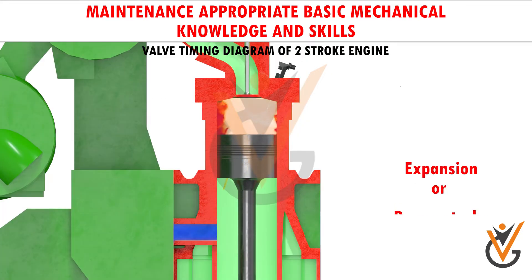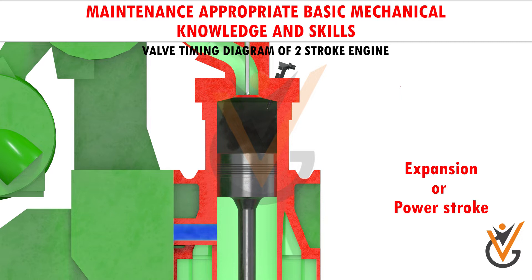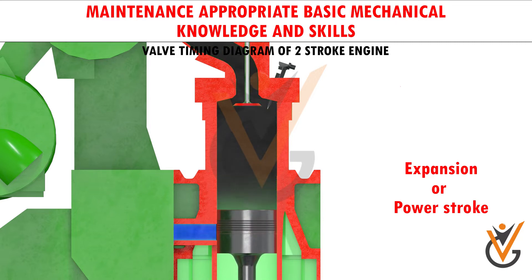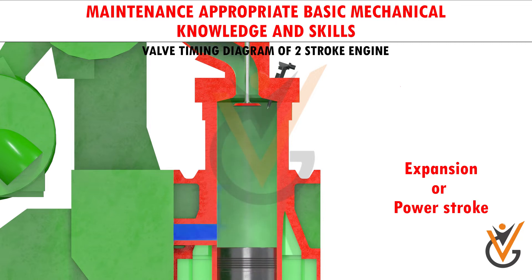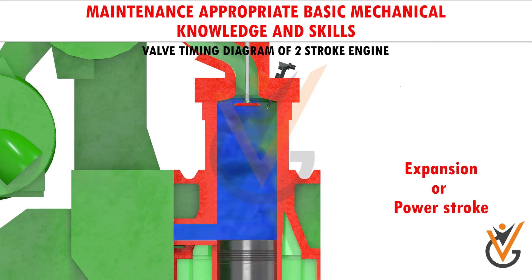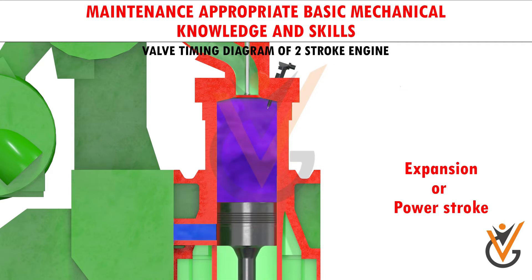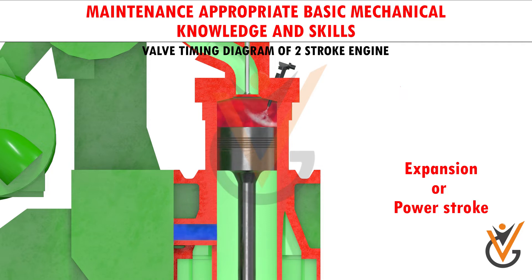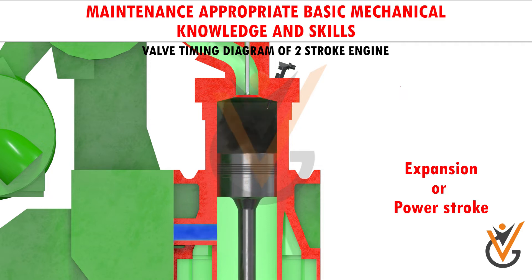The combustion energy is imparted onto the piston and the piston begins its downward motion. The gases inside the cylinder expand as the piston moves down — this is called the expansion or power stroke.